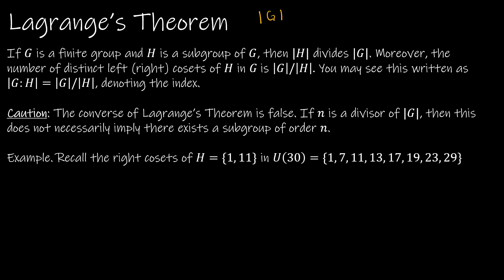For example, if G has order 30, then any subgroup H must have an order that is a divisor of 30 — so 1, 2, 3, 5, 6, 10, 15, or 30. What it doesn't tell us is that you're going to have a subgroup of each of those orders. It just says these are the possibilities. That's very important to understand. We're not necessarily going to have one of each.